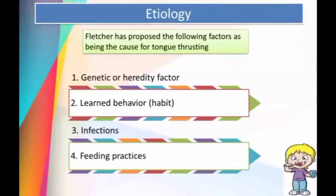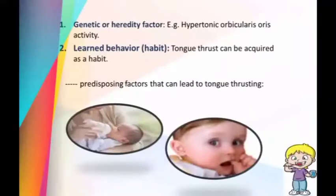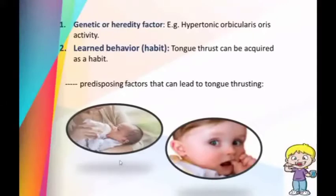Regarding etiology, Fletcher proposed different factors causing tongue thrusting habit: genetic or hereditary factors, learned behavior, and infection and feeding practices. As a genetic and hereditary factor, specific anatomic or neuromuscular variations in the orofacial region — for example, hypertonic orbicularis oris activity — can lead to tongue thrusting. As a learned behavior, tongue thrusting can be acquired as a habit, with predisposing factors including improper bottle feeding, prolonged thumb sucking, and prolonged tonsillar or upper respiratory tract infections.